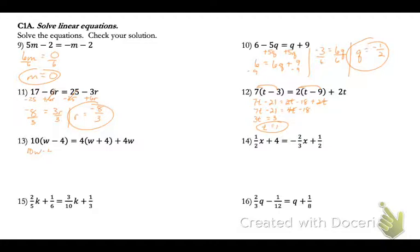On number 13, we're going to start it the same way by distributing. 10w minus 40 equals 4w plus 16 plus 4. Now we're going to just combine our w's on the right side. So 8w plus 16. And now let's subtract those 8w's over. So we get 2w equals, adding 40 is 56, or w equals 28.